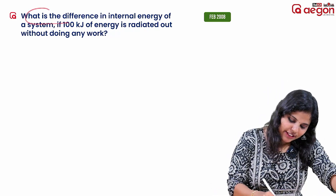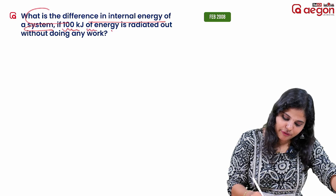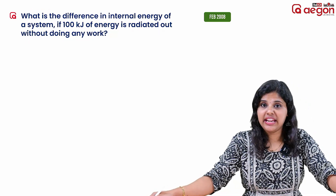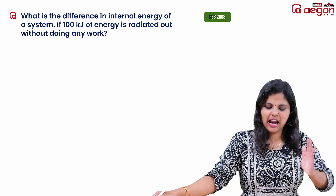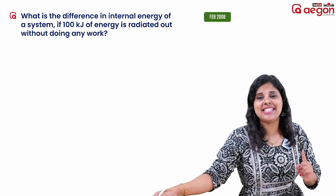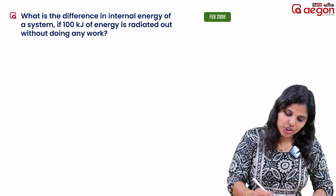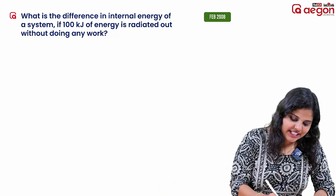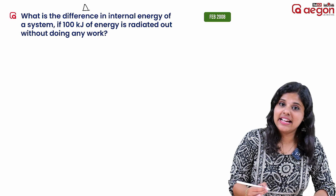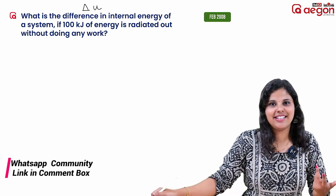What is the difference in the internal energy of a system, if 100 kJ of energy is radiated out without doing any work? What is the difference in internal energy? The difference is delta — the internal energy represents U.